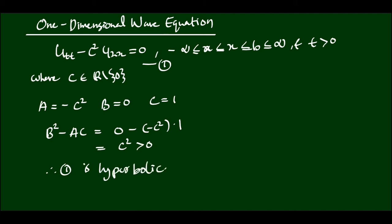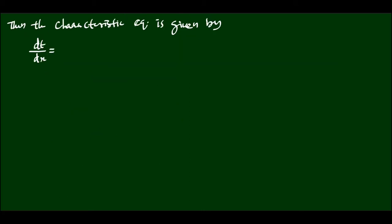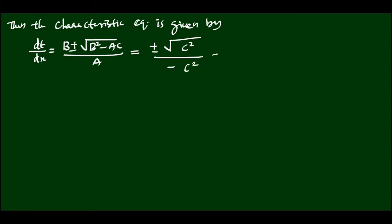So we can convert equation 1 into its canonical form by choosing an appropriate non-singular transformation. For that, we will use the characteristic equations for hyperbolic PDEs. Considering X as the first independent variable and T as the second, the characteristic equation is dT/dx equal to (B plus or minus square root of B squared minus AC) divided by A. Substituting the values of A, B, and C, we get plus or minus C divided by minus C squared, which equals minus or plus 1 over C.